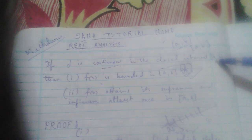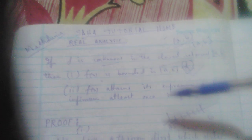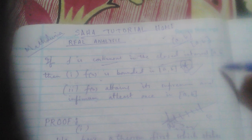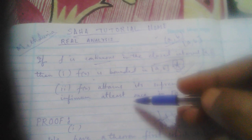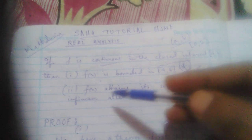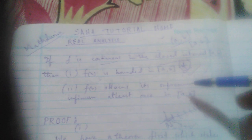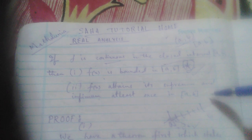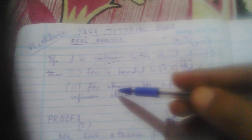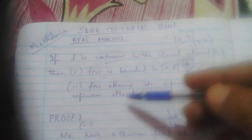I earlier discussed in another video that if f is continuous on a closed interval, then f(x) must be bounded on that interval. The first part was proved there. Now I am proving the second part: that f(x) attains its supremum and infimum at least once in the closed interval.